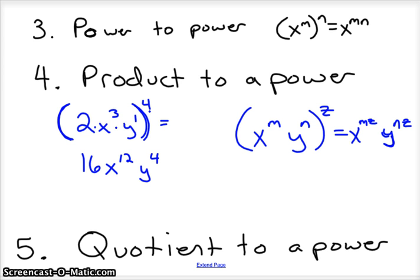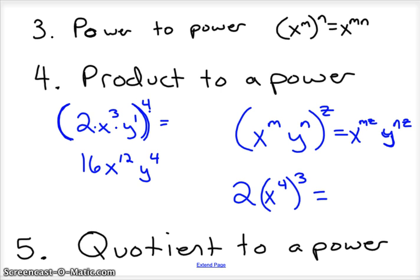Just remember the difference. If you had 2 times, then in parentheses x to the fourth, all to the third power, the parentheses don't go around the 2, so the 3 doesn't apply to the 2 at all. The answer would be 2x to the twelfth. That's product to power.